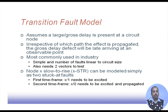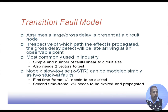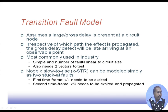Another type of delay fault, commonly used in industry, is the transition fault model. It assumes there is a large or gross delay present at a circuit node. If one particular node has a very large delay, the other delays in the circuit become insignificant. Irrespective of which path the effect is propagated, the gross delayed effect will arrive late at an observable point. This model is simple and the number of faults is linear to the circuit size — if there are N nodes, there are N faults.